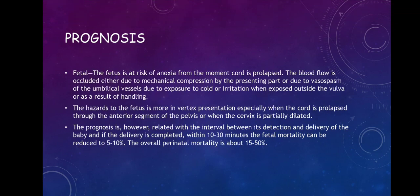Regarding prognosis — fetal: the fetus is at risk of anoxia from the moment the cord is prolapsed. Blood flow is occluded either due to mechanical compression by the presenting part, or due to vasospasm of the umbilical vessels due to exposure to cold or irritation when exposed outside the vulva, or as a result of handling. The hazards to the fetus are greater in vertex presentation, especially when the cord is prolapsed through the anterior segment of the pelvis or when the cervix is partially dilated.